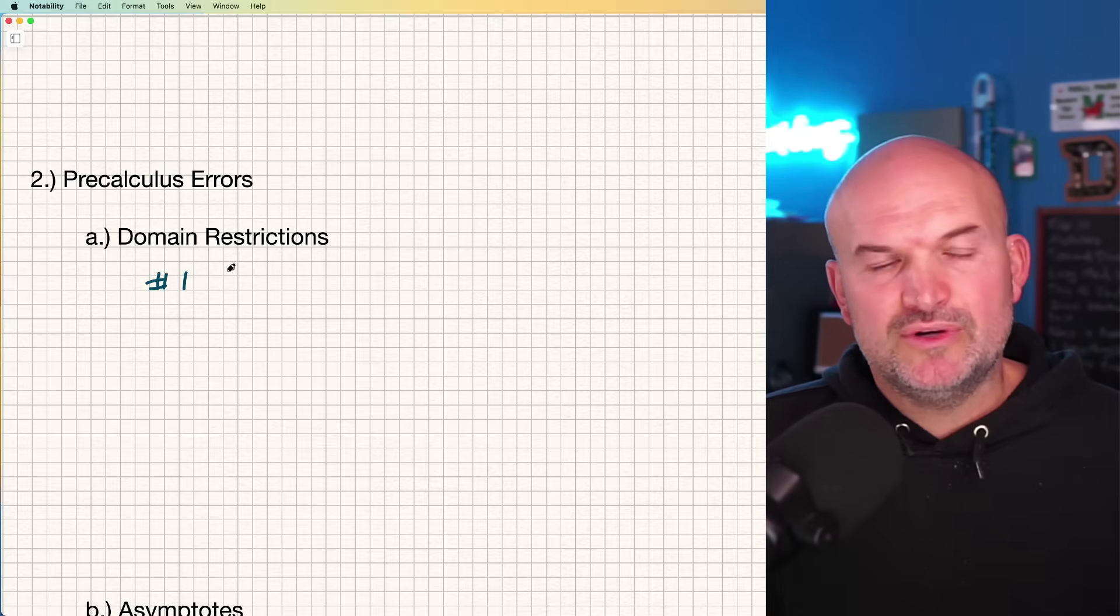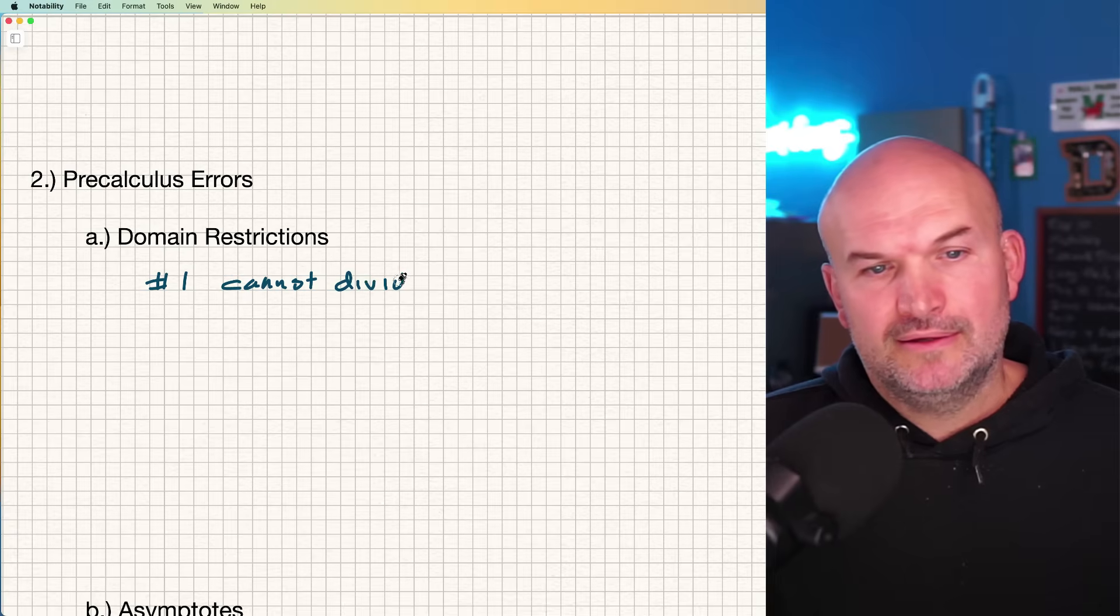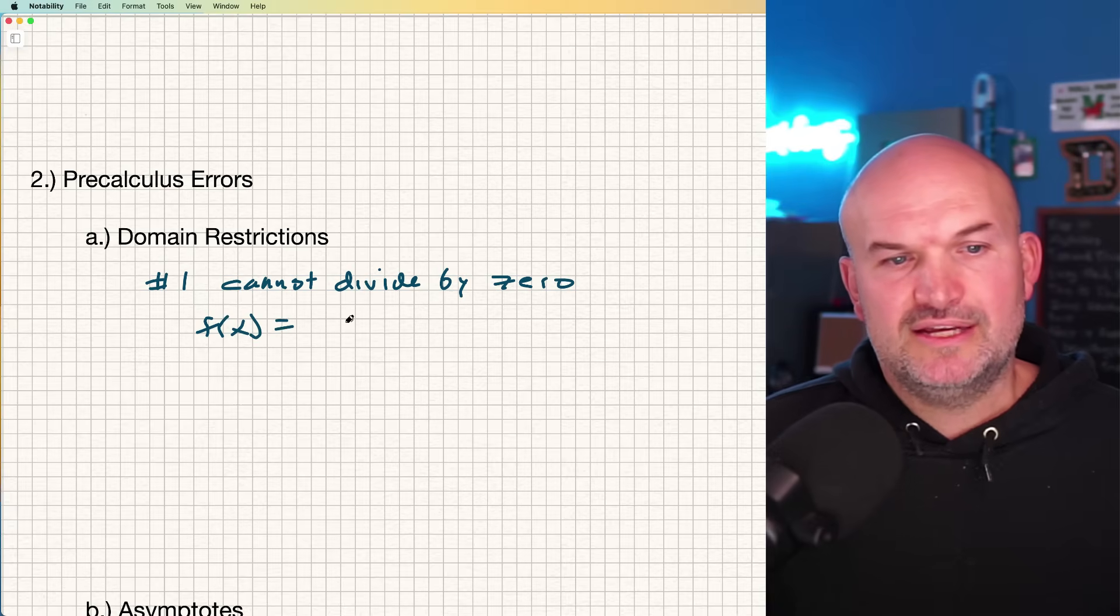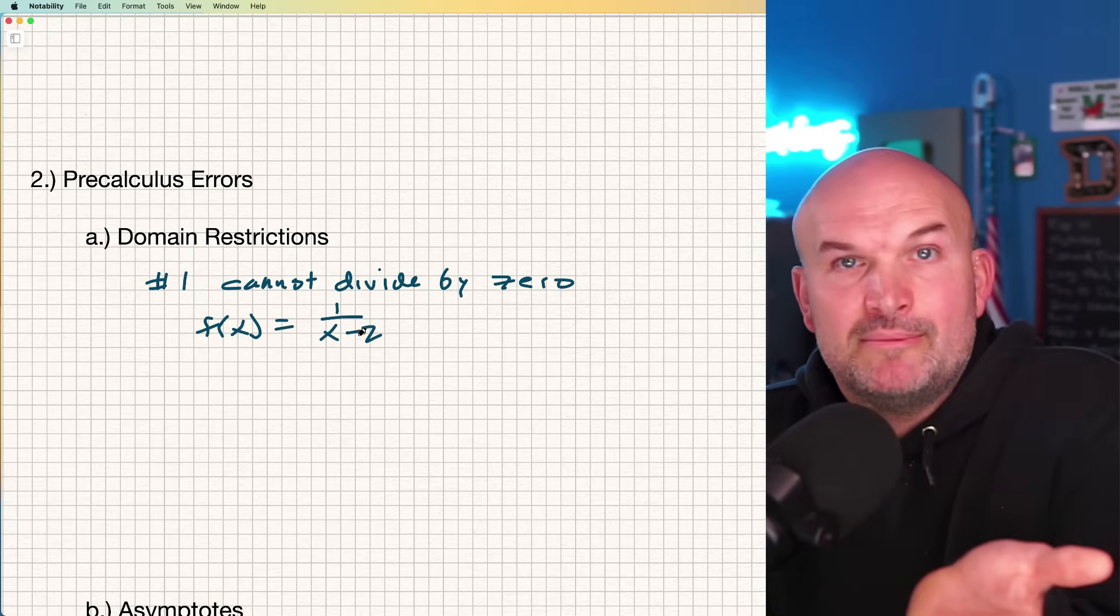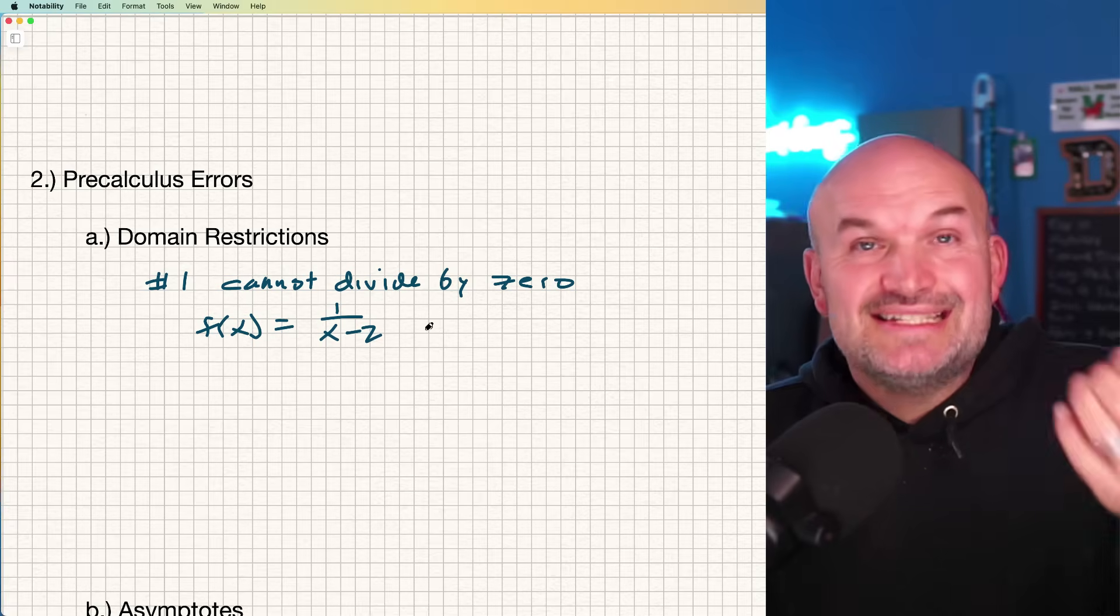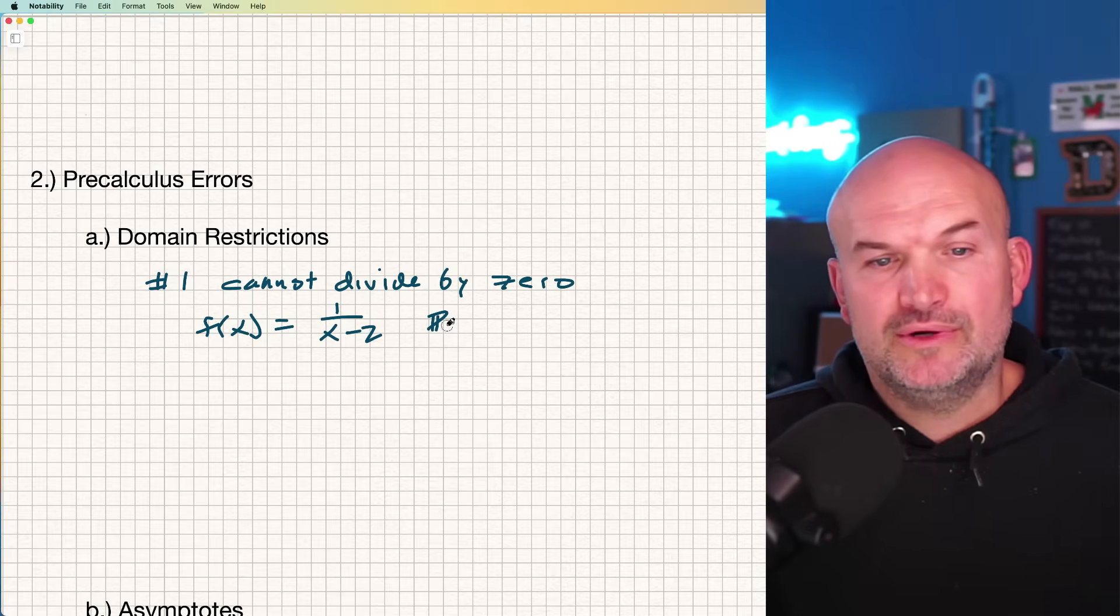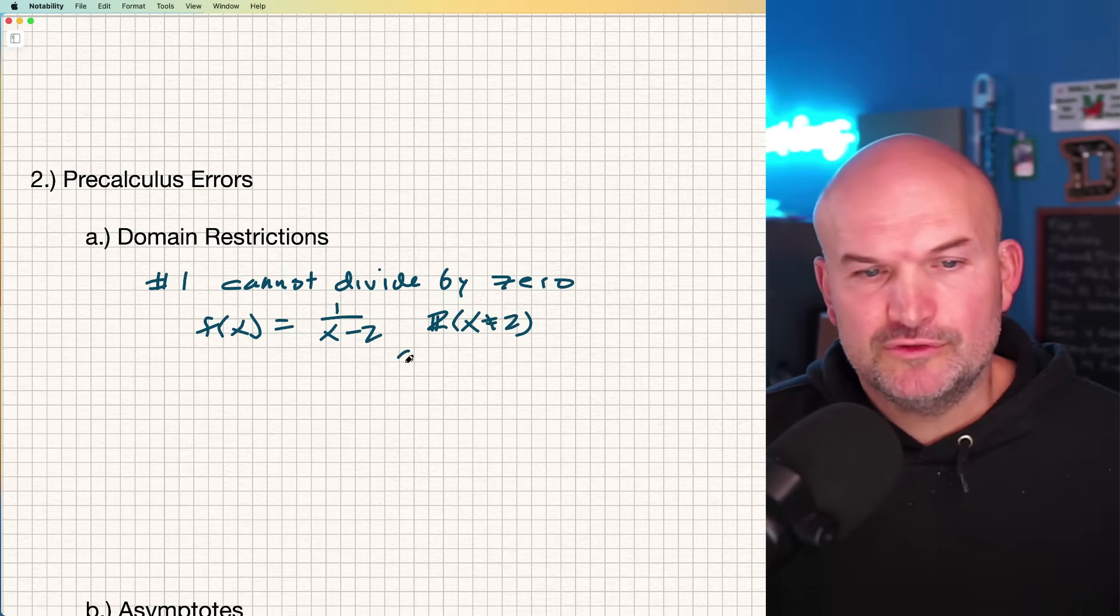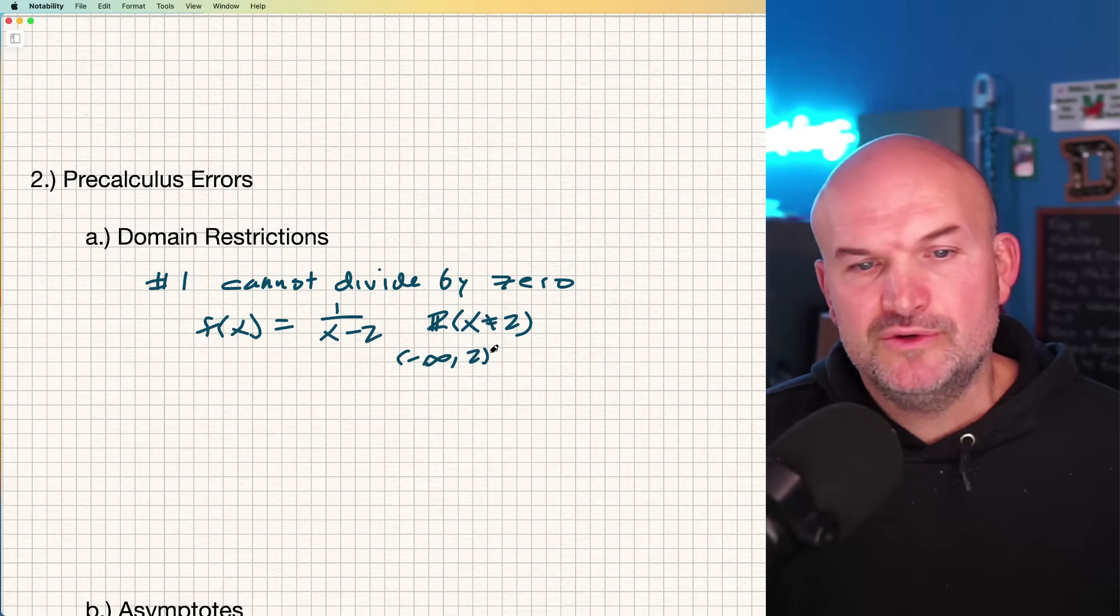Number one, you cannot divide by zero. So if I had a function like f(x) equals one over x minus two, what is the value that makes my denominator equal to zero? It's two. So my domain is all real numbers except x cannot equal two. You can write this in interval notation: negative infinity to two, union two to infinity.